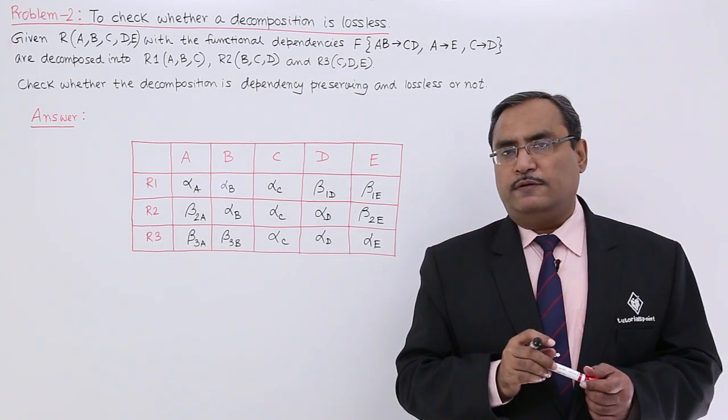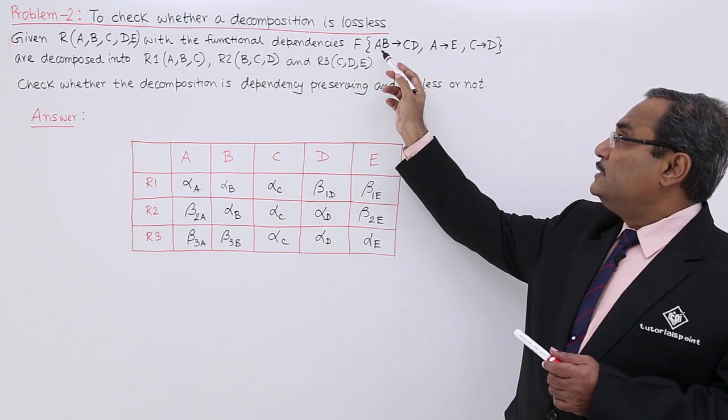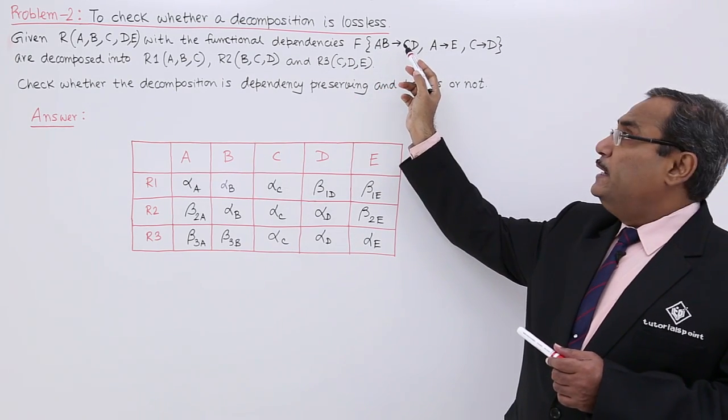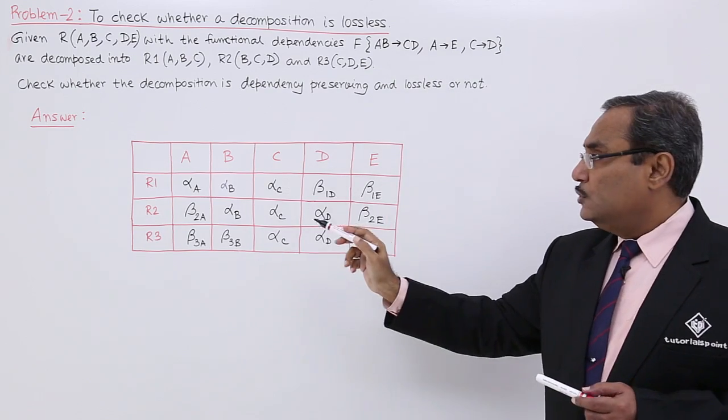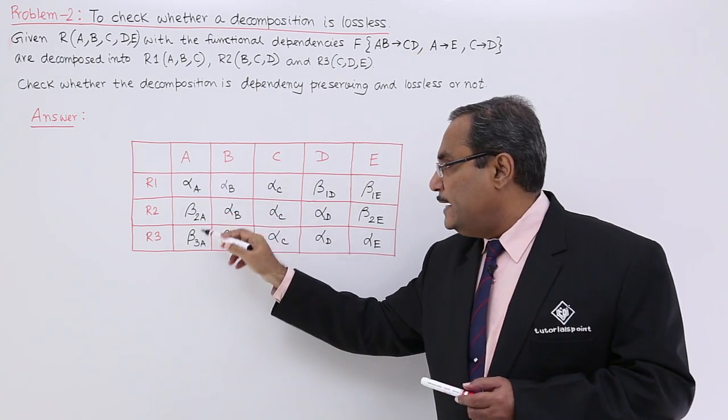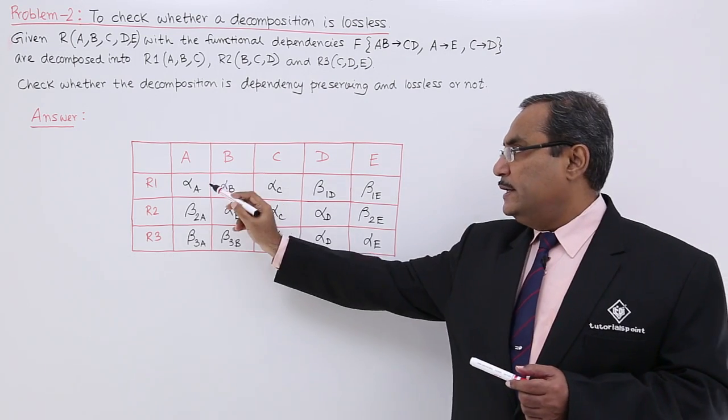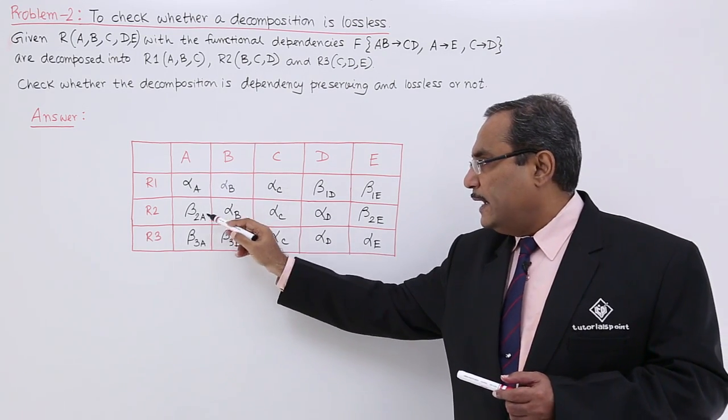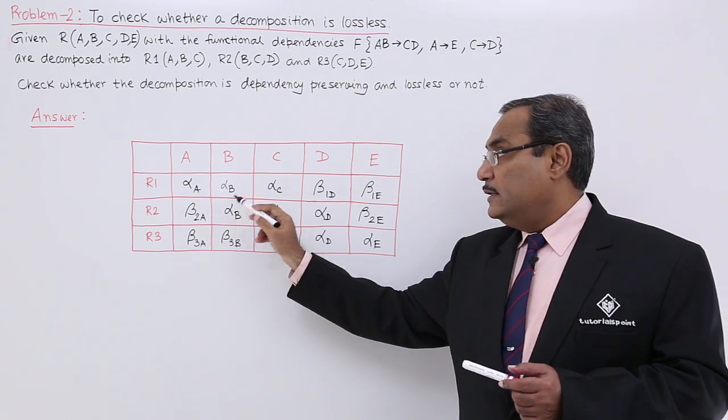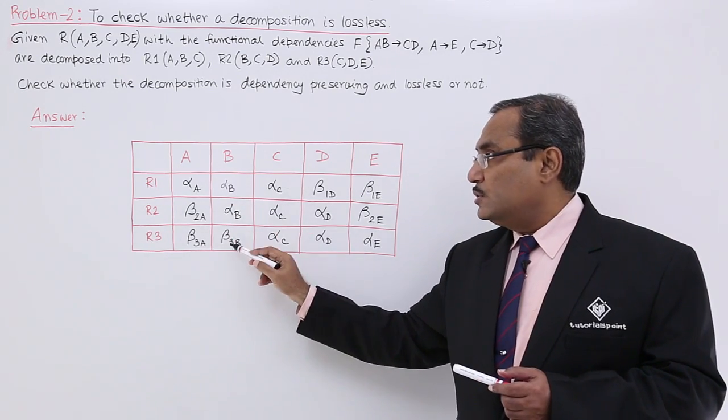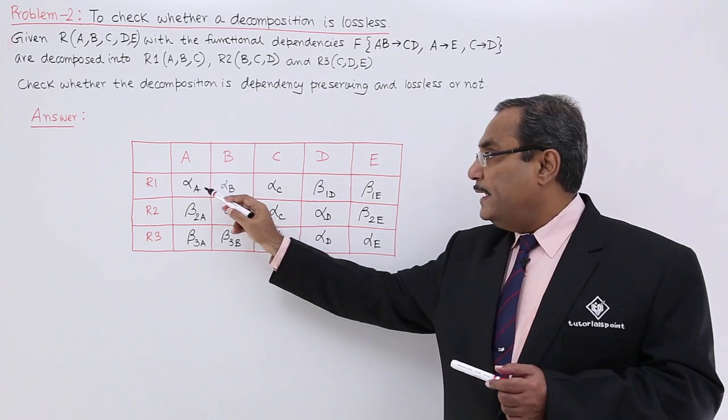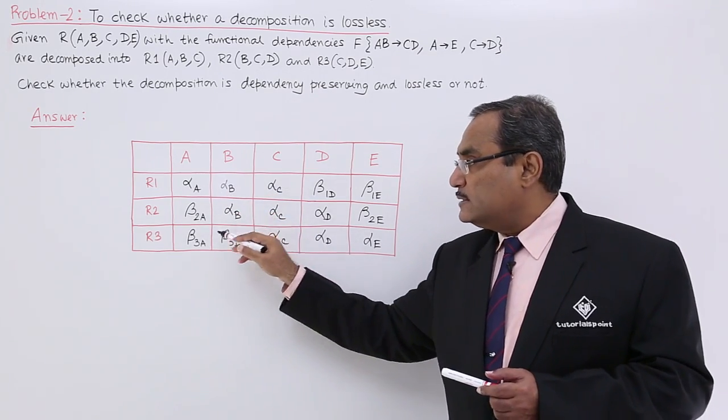Now, let us consider the functional dependencies. Here the functional dependencies A, B determines C, D. You consider A, B. Are you finding any two rows where A and B symbols are same? That means, here it is alpha A, alpha B. I will be finding another alpha A, alpha B. I think that is no such two rows can be found where the A and B this pair will have the same values.